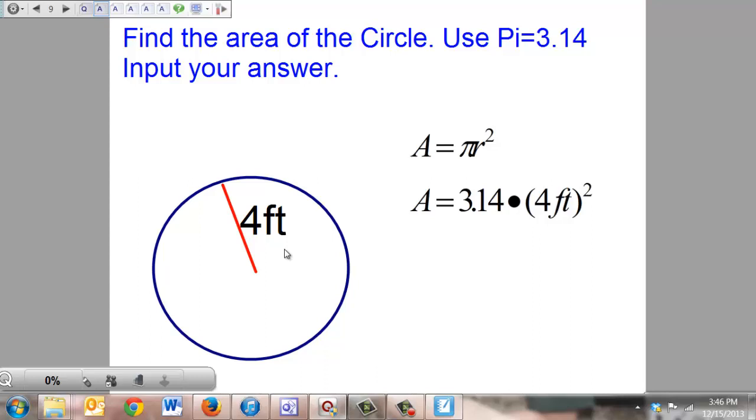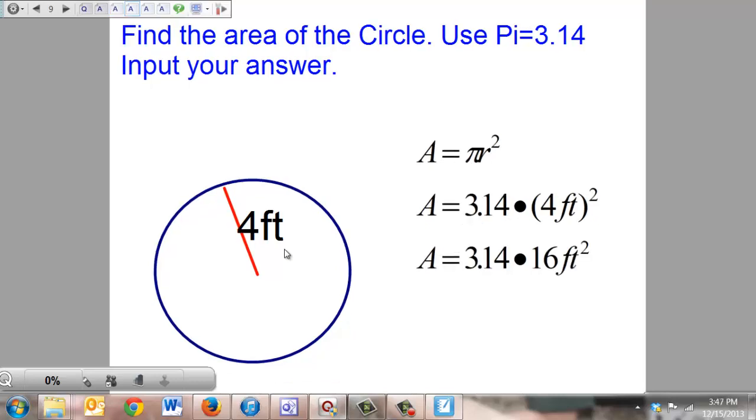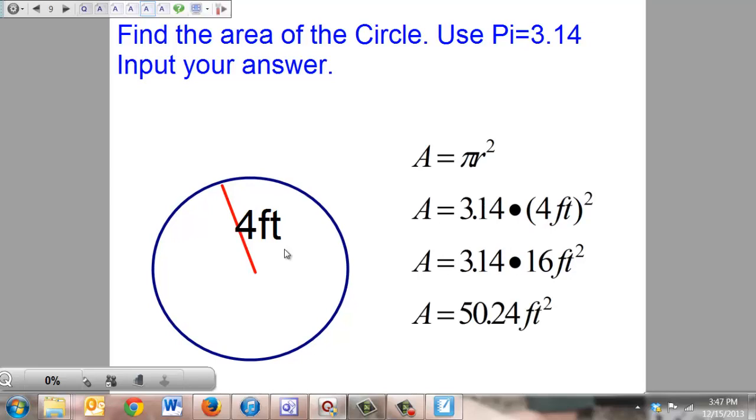They gave us a whole radius, so we're going to put the whole 4 feet in parentheses. 4 feet all squared is 16 feet squared. Multiply that times 3.14, you get 50.24 feet squared.